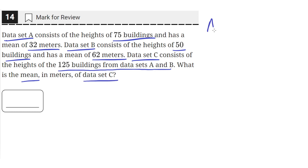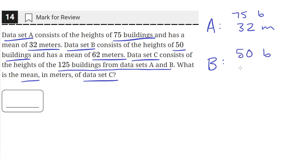So we have data set A that has 75 buildings and the mean is a height of 32 meters. And then we have data set B that has 50 buildings and a mean height of 62 meters. Data set C has 125 buildings and the mean is unknown, but the buildings in data set C are from data sets A and B.